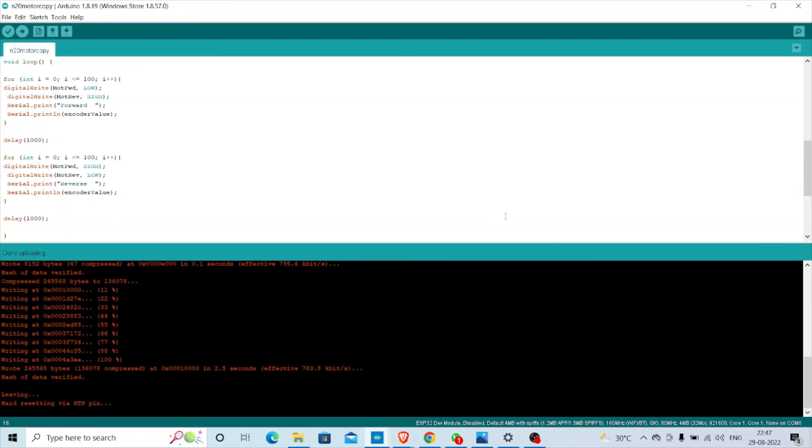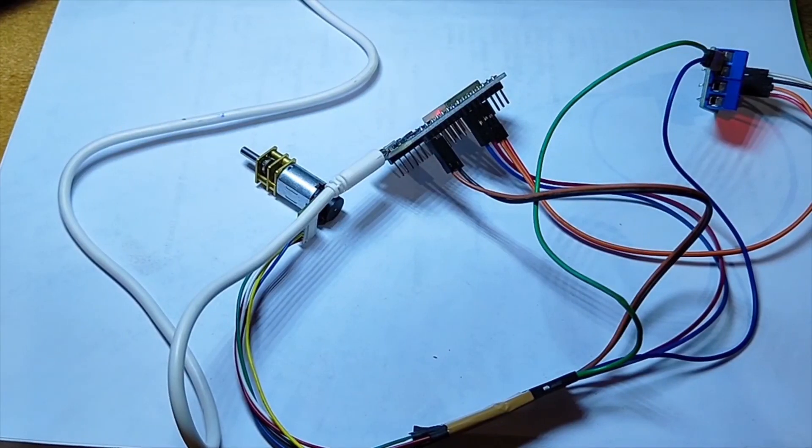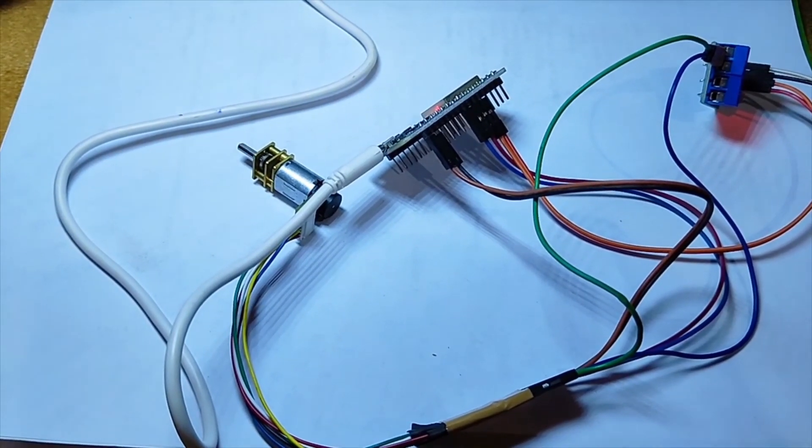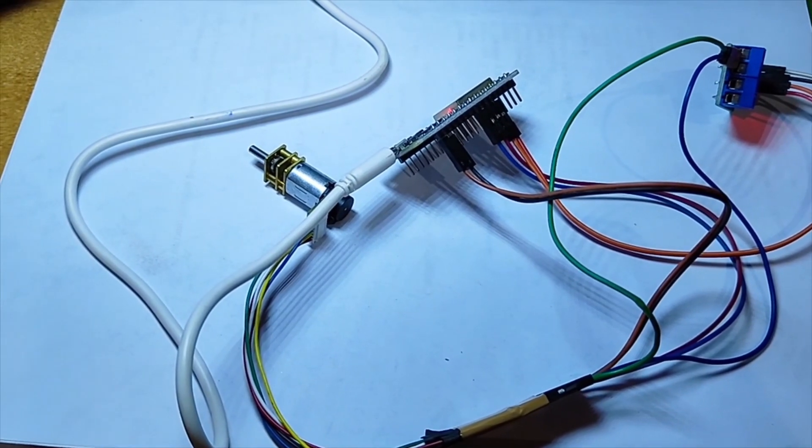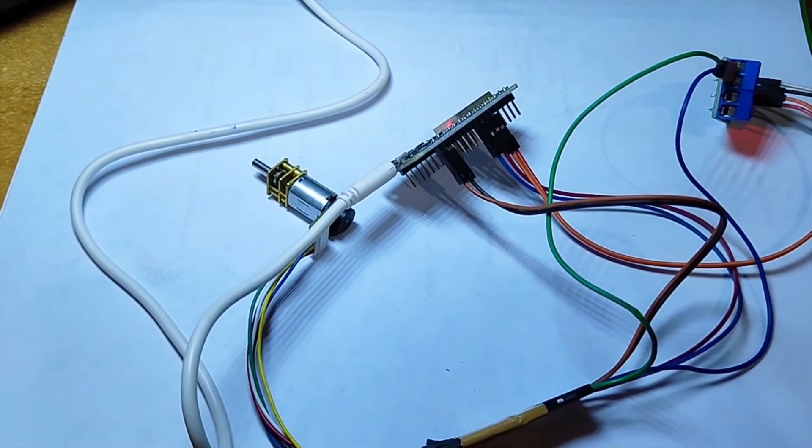Now, press the EN button on the ESP32 so that you can see that ESP32 was controlling the N20 motor. As you can see, guys, this is how we can control the N20 encoder motor with the ESP32. And thank you for watching the video. Have a nice day. Take care.